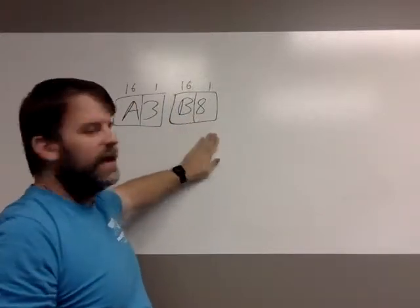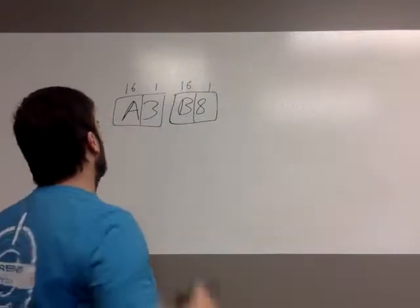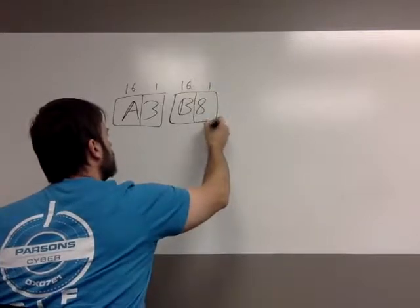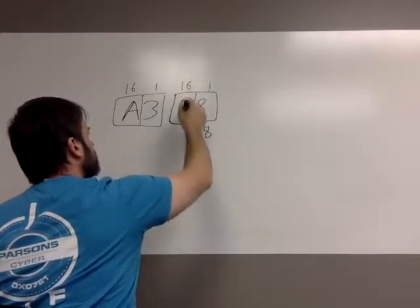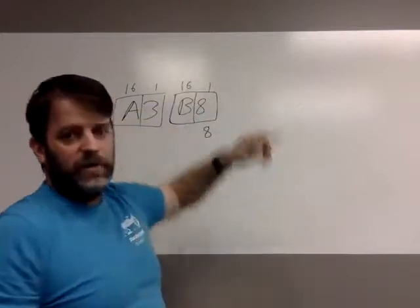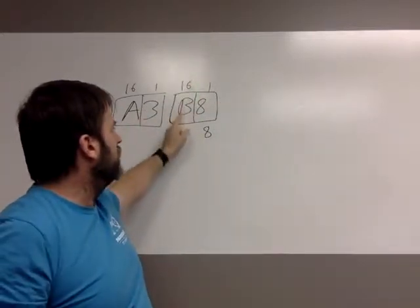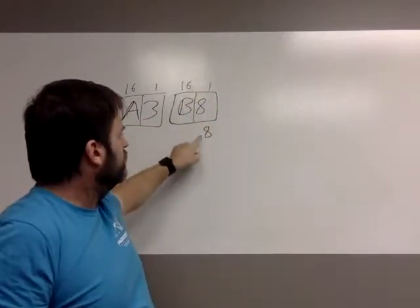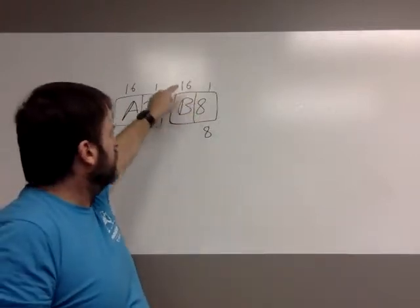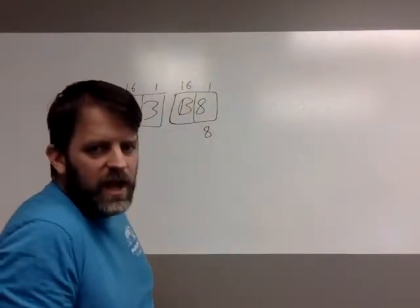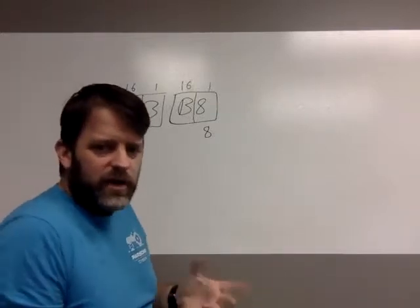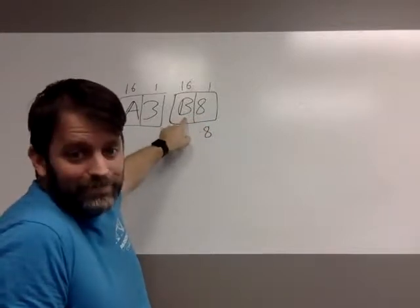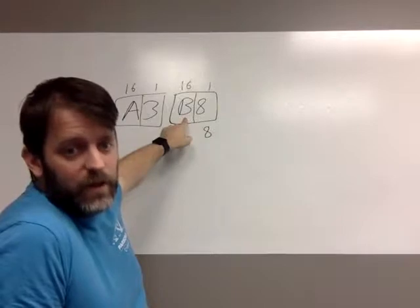That's the value of the individual bytes separately. So this first one is B8. With binary, we just had to pull the number down if there was a 1 in a place, because that's all you could really have. Here, these aren't just 0s or 1s — a B is what? It's an 11, right? It's a value of 11. A is 10, right? Follows after 9.